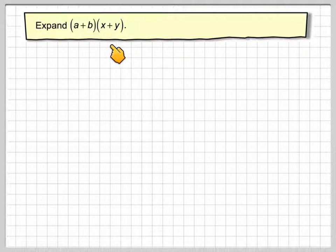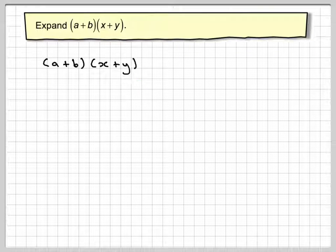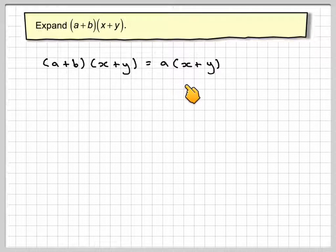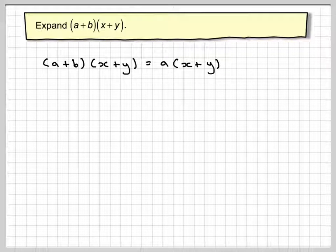So I'm going to expand (a+b)(x+y). So I've got (a+b) times (x+y). That's a times (x+y), so a times the second bracket, and then plus b times the second bracket.